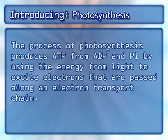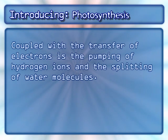The process of photosynthesis produces ATP from ADP and PI by using the energy from light to excite electrons that are passed along an electron transport chain. Coupled with the transfer of electrons is the pumping of hydrogen ions and the splitting of water molecules.